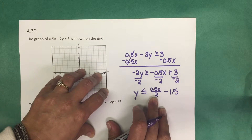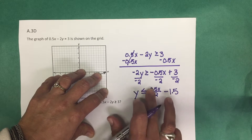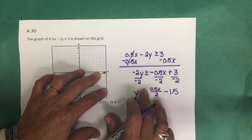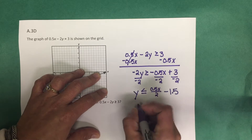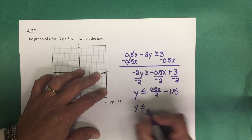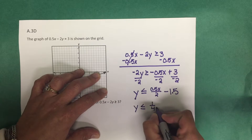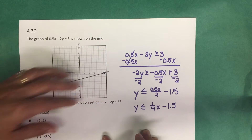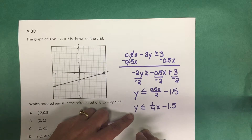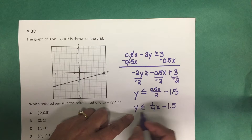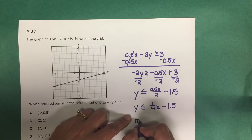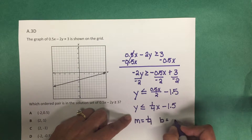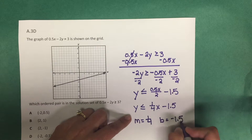We can rewrite the x term as a fraction: dividing 0.5 by 2 gives us one-fourth. So y is less than or equal to one-fourth x minus 1.5. This means the slope of this linear inequality is positive one-fourth and the y-intercept is negative 1.5.